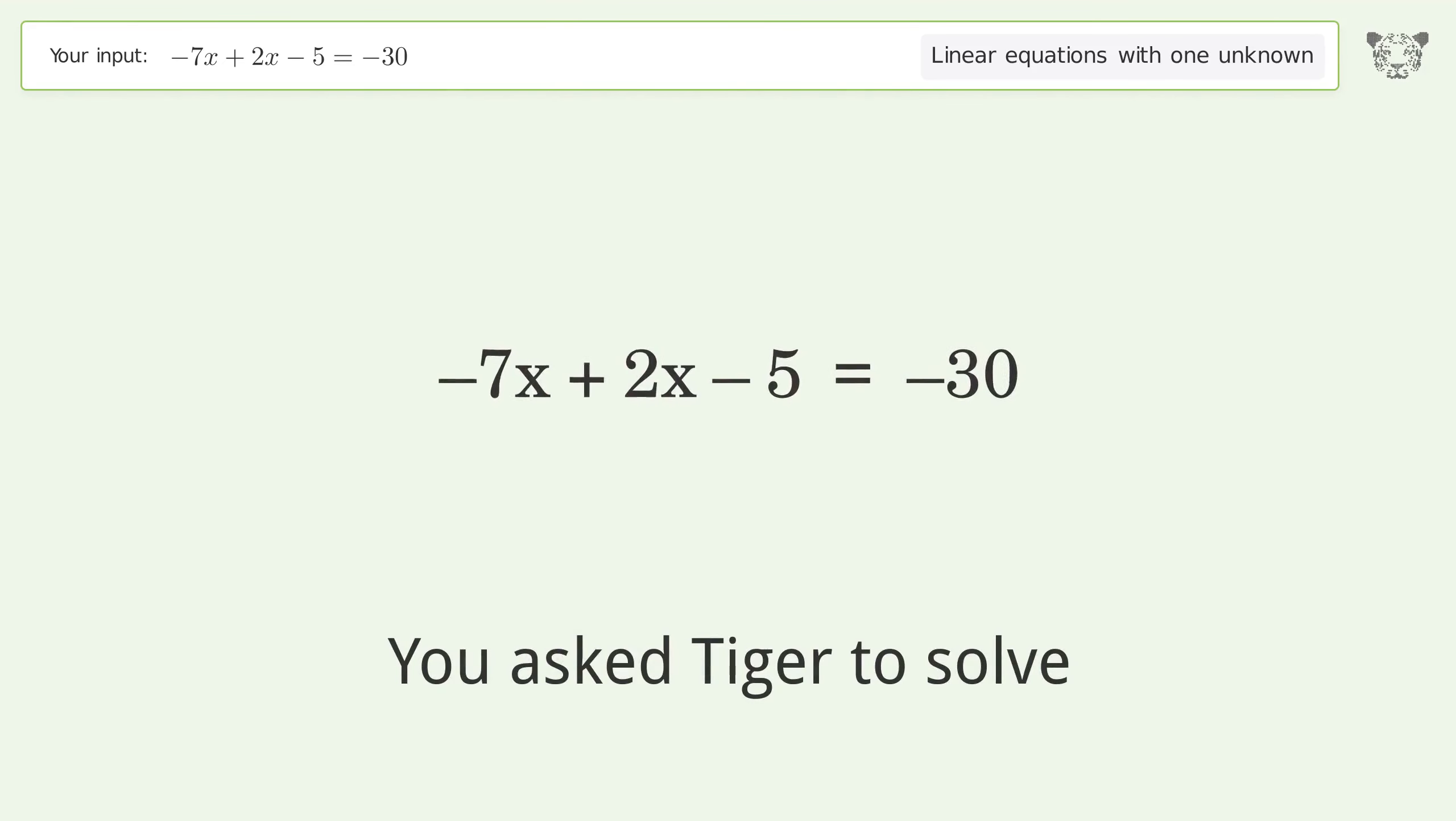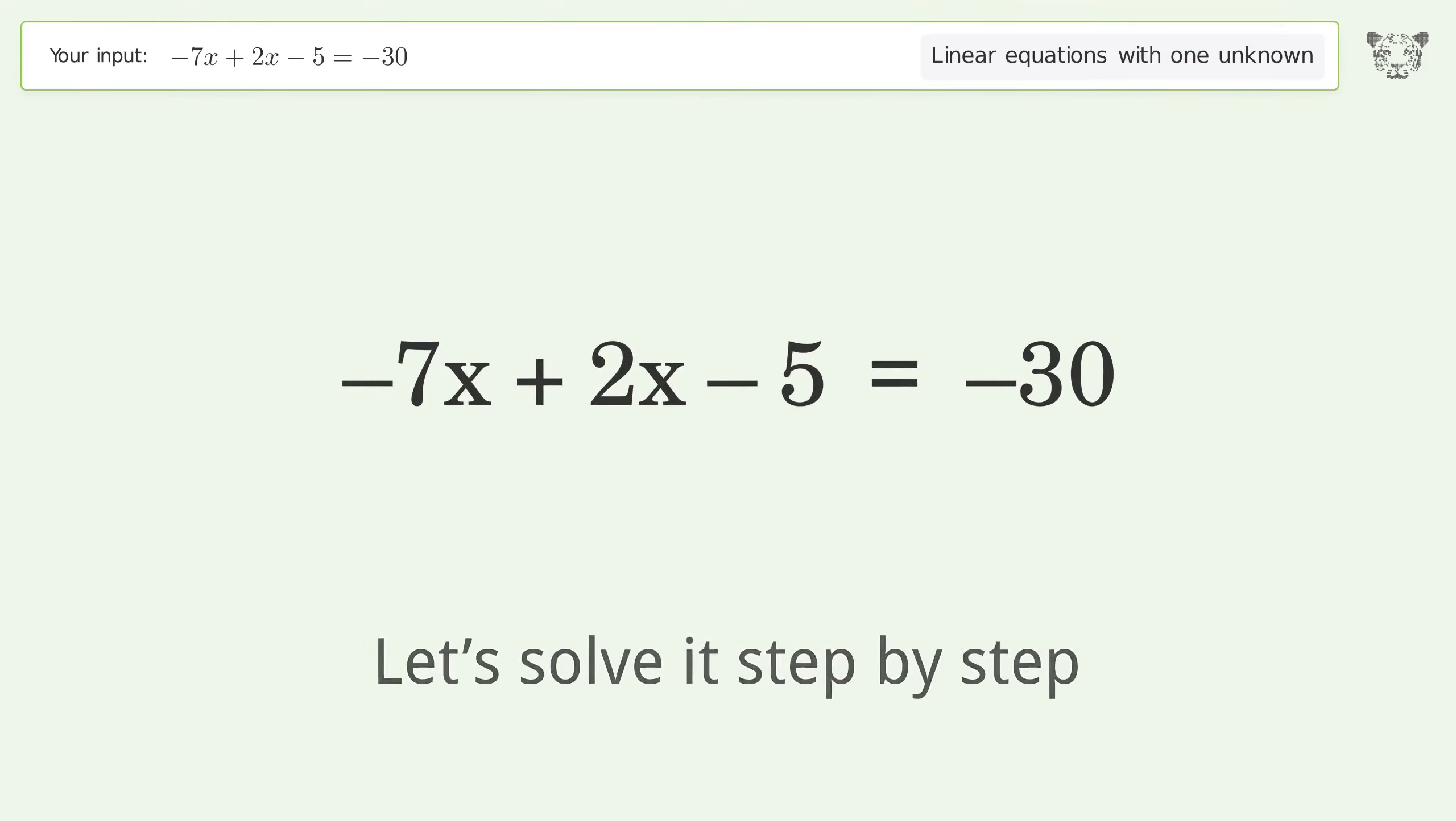You asked Tiger to solve this linear equation with one unknown. The final result is x equals 5. Let's solve it step by step. Simplify the expression, simplify the arithmetic.